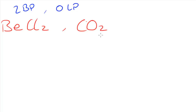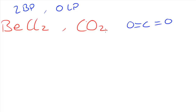Now CO₂, if we were to draw out the structure, it looks something like this. We have carbon and it's double bonded to oxygens on either side. You might be thinking, aren't there four bonded pairs? And the answer is yes, there are four bonded pairs. But when we're looking at the shape of this molecule, we can look at it as if we only have two bonded pairs, since these are going to go in the same direction. The double bond stays together in that particular direction.